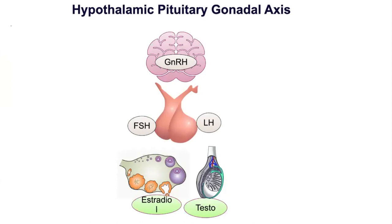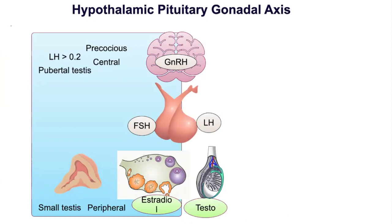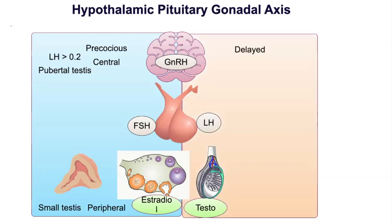Precocious puberty due to hypothalamic-pituitary disorder is associated with a basal LH level more than 0.2 mIU/mL and appropriate testicular enlargement in accordance with the pubertal stage — this is known as central precocious puberty. Whereas precocious puberty due to adrenal or gonadal disorder is characterized by a basal LH level less than 0.2 and smaller testes relative to the pubertal stage, known as peripheral precocious puberty.